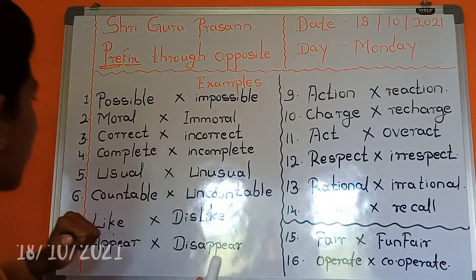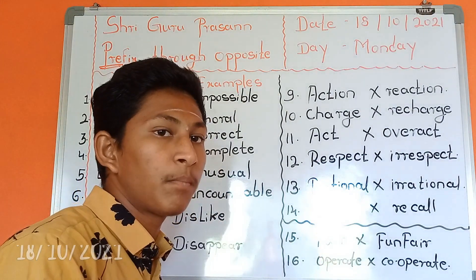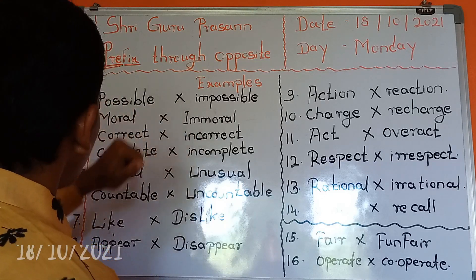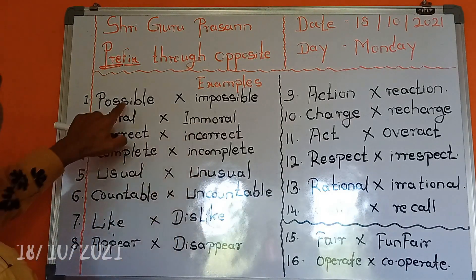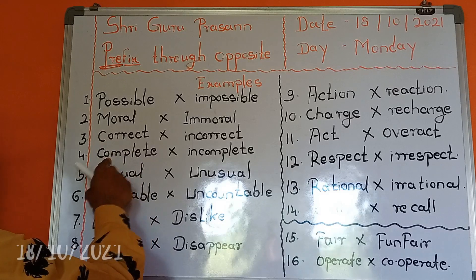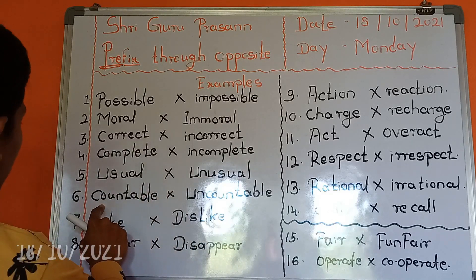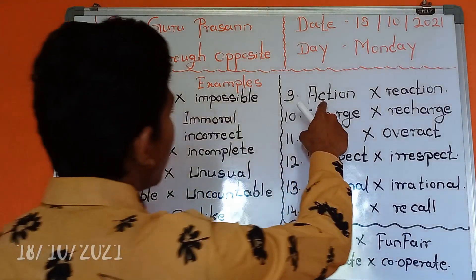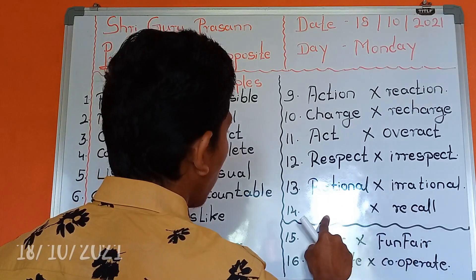I will tell you how prefixes work in day-to-day life and how we should use them. For example: possible / impossible, moral / immoral, correct / incorrect, complete / incomplete, usual / unusual, countable / uncountable, like / dislike, appear / disappear, action / reaction, charge / recharge, act / overact, respect / disrespect, rational / irrational, call / recall.